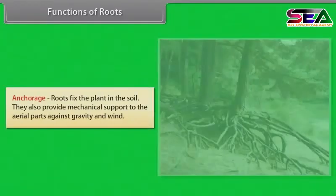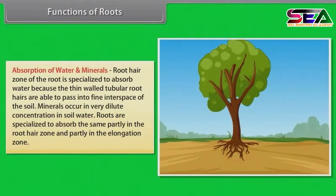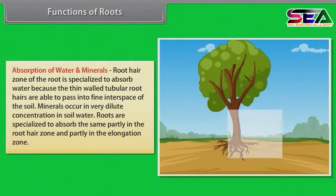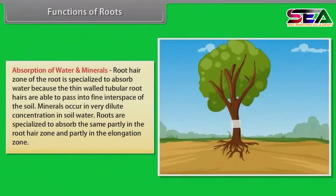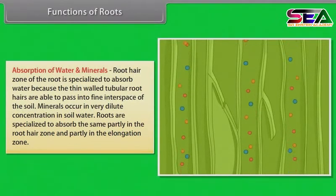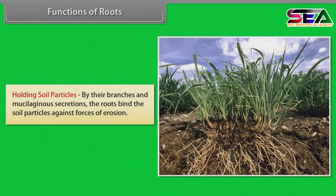Functions of roots. Anchorage: roots fix the plant in the soil and provide mechanical support to the aerial parts against gravity and wind. Absorption of water and minerals: the root hair zone is specialized to absorb water because the thin-walled tubular root hairs are able to pass into the fine interspaces of the soil. Minerals occur in very dilute concentration in soil water; roots absorb these partly in the root hair zone and partly in the elongation zone. Conduction: water and minerals absorbed by the rootlets are conducted by the various parts of the root system to the shoot system. Holding soil particles: by their branches and mucilaginous secretions, roots bind the soil particles against forces of erosion.